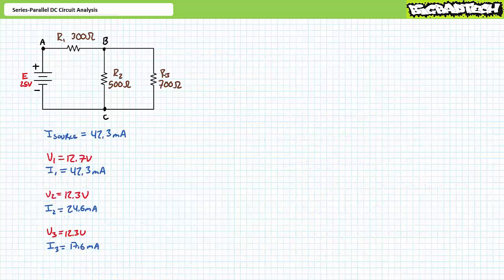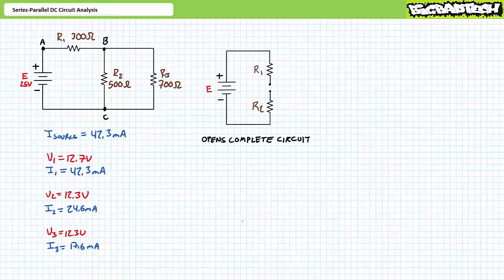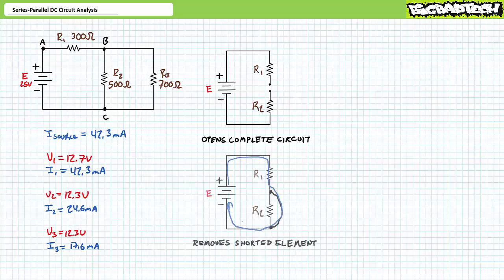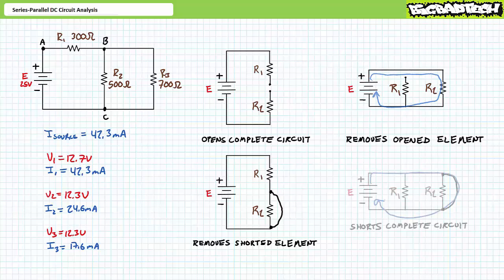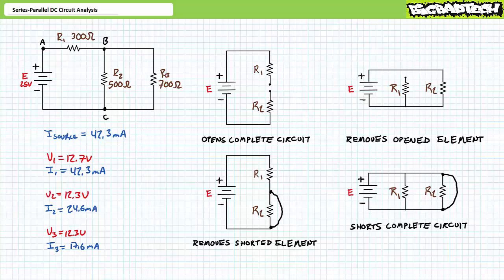While we've got the values for this circuit right in front of us, let's quickly discuss the influence of opens and shorts in series-parallel circuits, using our expected values as a basis of comparison. Recall: an open in a series circuit opens the complete circuit and no current can flow, whereas a short in a series circuit removes the shorted element from consideration. Conversely, an open in a parallel circuit removes the open element from consideration, whereas a short in a parallel circuit shorts out the entire circuit. With this knowledge, general guidance about opens and shorts in more complicated series-parallel circuits is simply: it depends — it depends where the open or short occurs.